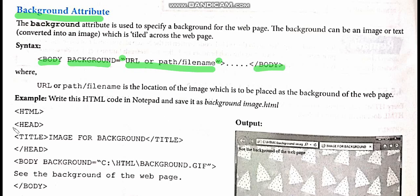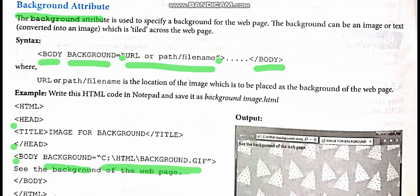Looking at the code: HTML contains head and title, then you close the head. Then begins the body. In the body, they have used the attribute background, and they have given the complete path of the image — it's a GIF image, background.gif, stored in the HTML folder which is in the C drive. This is the complete path of the picture you want as the background. Then there is backslash body to end it, and then backslash HTML. This completes the entire code, and the background image will be visible.